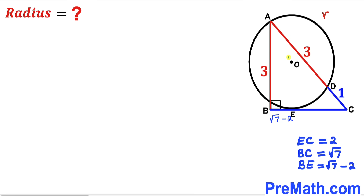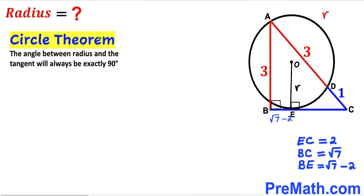In the next step, I'm going to connect center O with the point of tangency E. We know OE is our radius r. Recalling the circle theorem: the angle between a radius and a tangent line is always exactly 90 degrees, so this angle is 90 degrees since OE is the radius and BC is the tangent line.